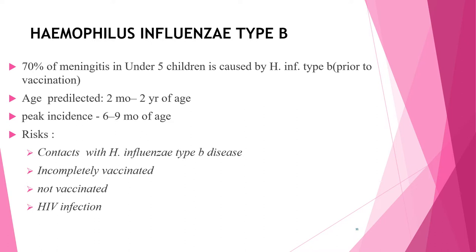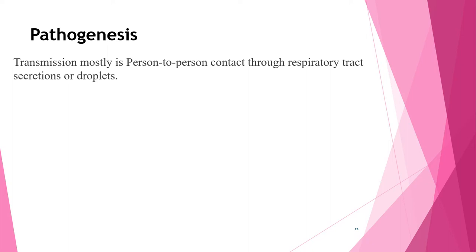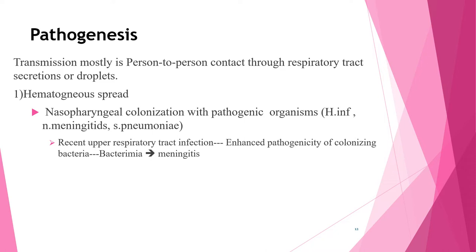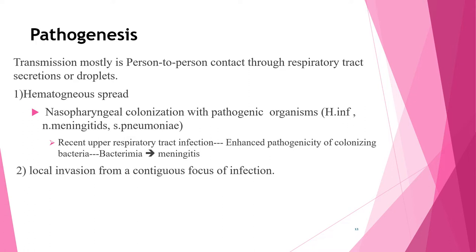Regarding pathogenesis: bacterial meningitis outside the neonatal period is typically due to bacterial colonization of the nasopharynx, with subsequent invasion into the bloodstream causing bacteremia. Bacterial organisms then breach the blood-brain barrier and enter the subarachnoid space to cause infection and inflammation. Meningitis pathogens frequently colonize the nasopharynx of children, but rapid invasion after recent colonization may also occur. The microbiome of the nasopharynx is a complex community of bacteria that may enhance or inhibit colonization.